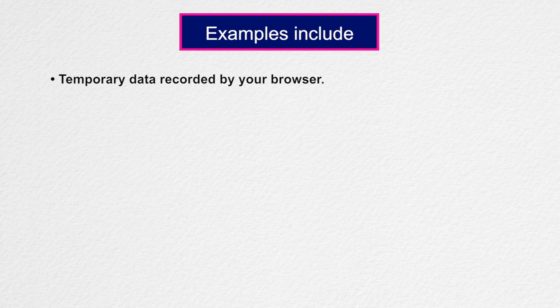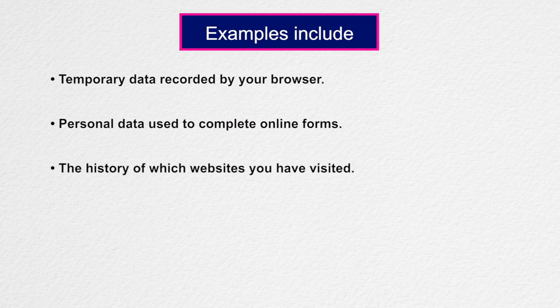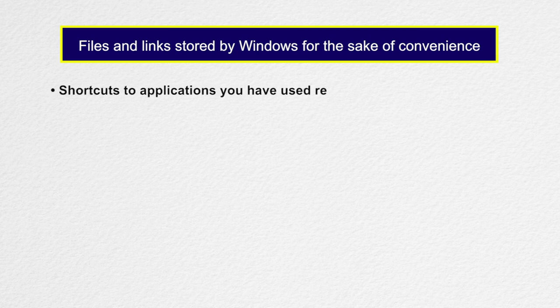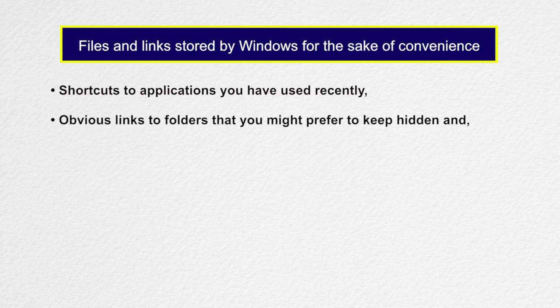This is not a major issue for electronic documents, but can be very important for information collected automatically whenever you use your computer. Examples include: temporary data recorded by your browser while displaying web pages, including text, images, cookies, account information, personal data used to complete online forms, and the history of which websites you have visited; temporary files saved by various applications to help you recover should your computer crash, which might contain text, images, spreadsheet data, and the names of other files; and files and links stored by Windows for convenience, such as shortcuts to recently used applications, links to folders you might prefer to keep hidden, and the contents of your recycle bin.